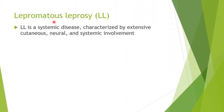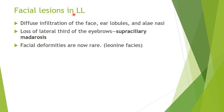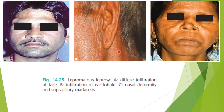Lepromatous leprosy is a systemic and extensive disease — a very severe form with cutaneous, neural, and systemic involvement. The facial lesions show diffuse infiltration of the face, ear lobules, and alae nasi. There is loss of the lateral third of the eyebrow, called superciliary madarosis. Leonine facies is now relatively rare. The image shows diffuse facial infiltration, ear lobule infiltration, and superciliary madarosis with loss of the lateral one-third of the eyebrow.